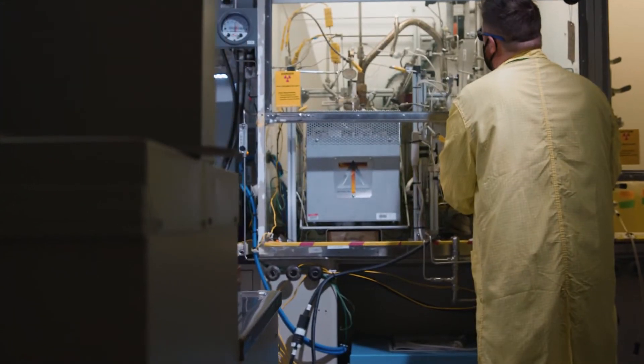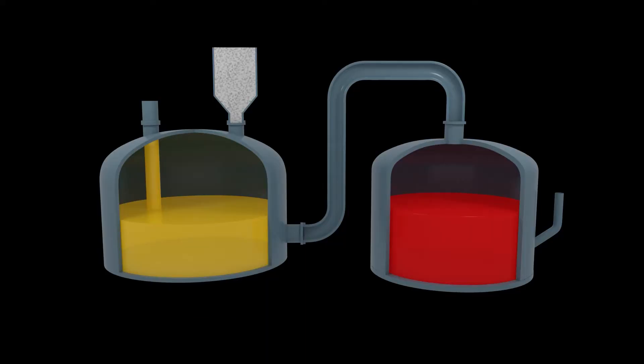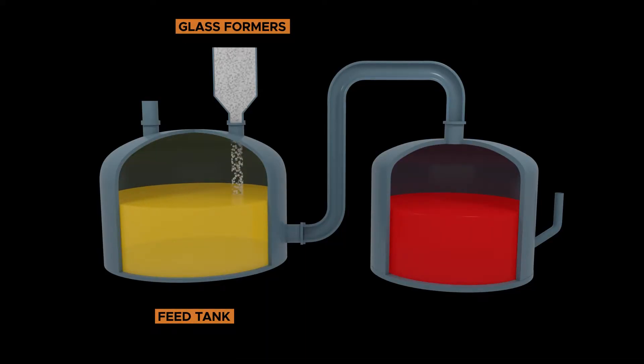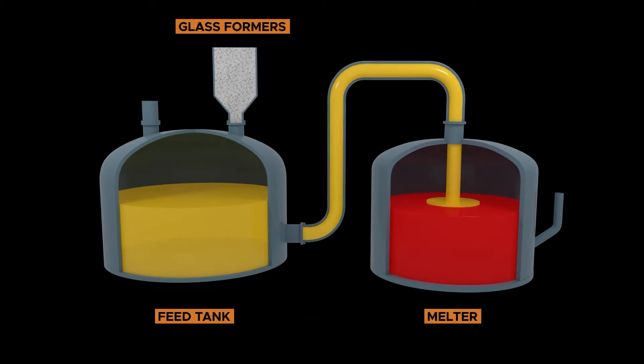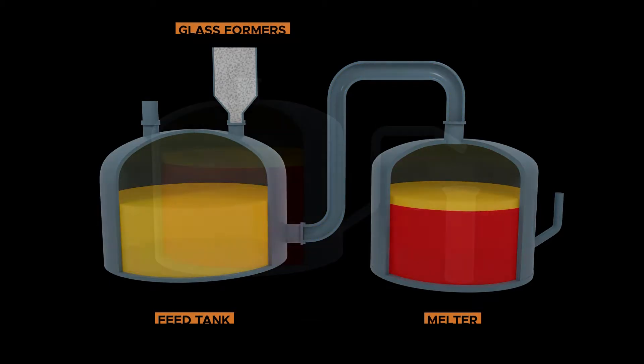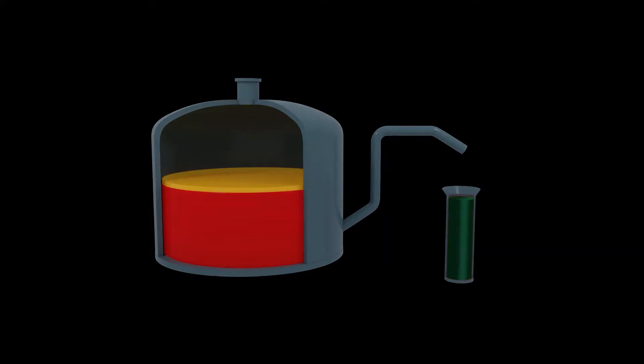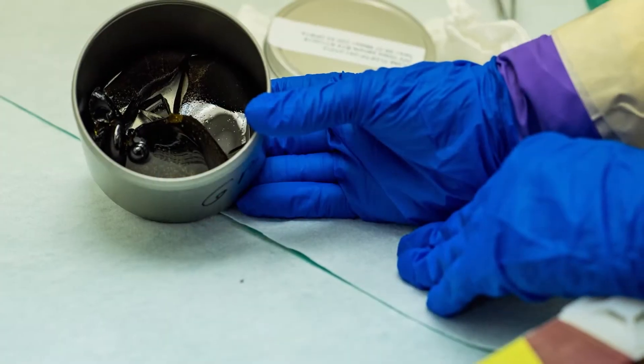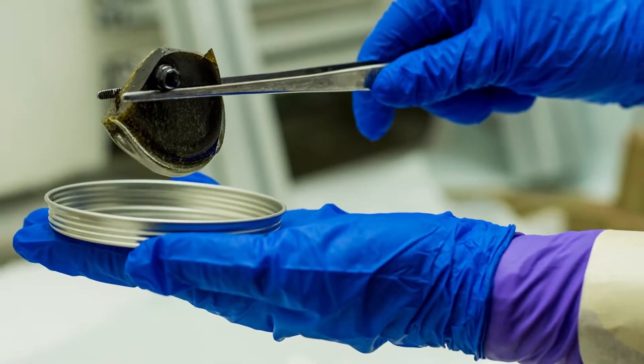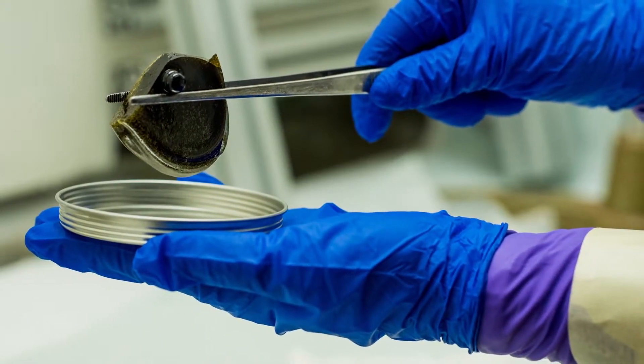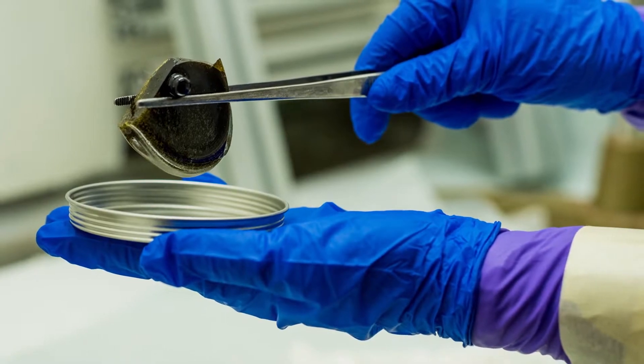The third step is the vitrification process. This includes a melter operating at very high temperatures to melt a mixture of waste and glass forming chemicals. The molten glass cools and solidifies, locking radioactive materials into the glass structure. The vitrification process was pioneered by researchers at Pacific Northwest National Laboratory in the 1970s.